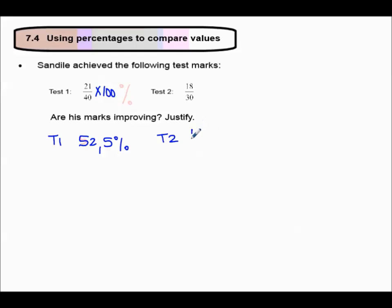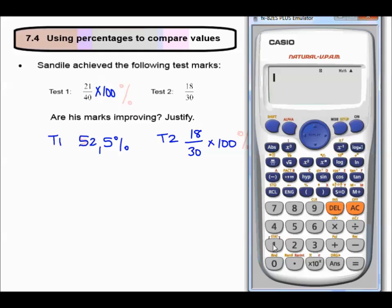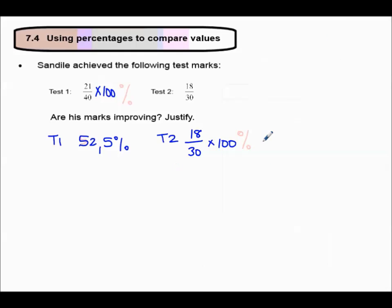Test 2 would be 18 out of 30, multiplied by 100%. 18 out of 30, multiplied by 100, equals 60%. Are his marks improving? Yes, he got 52.5% for test 1, and the second test he improved and got 60%.